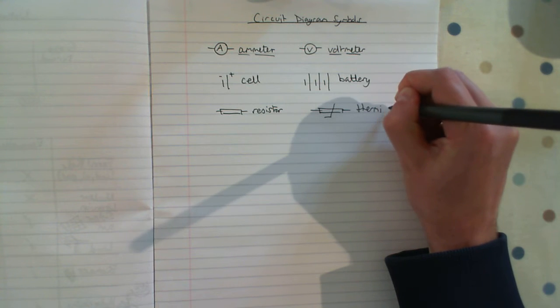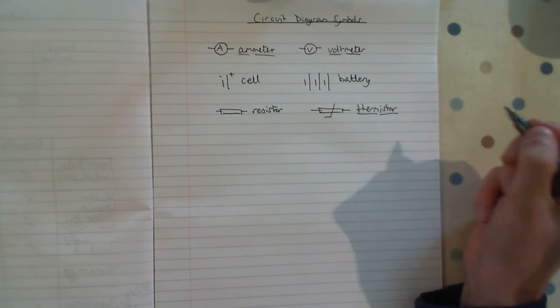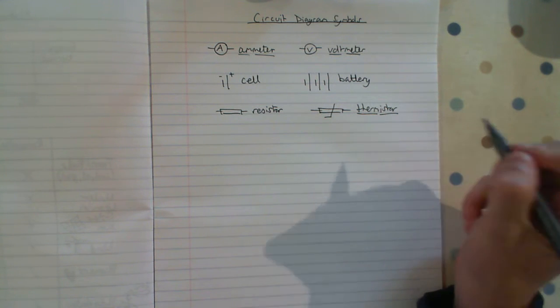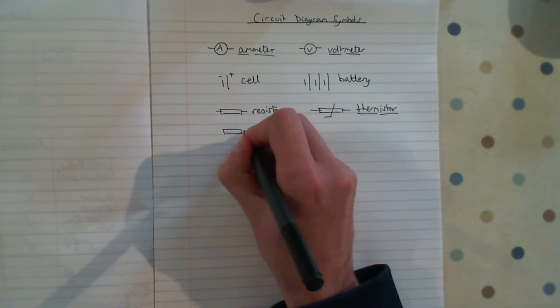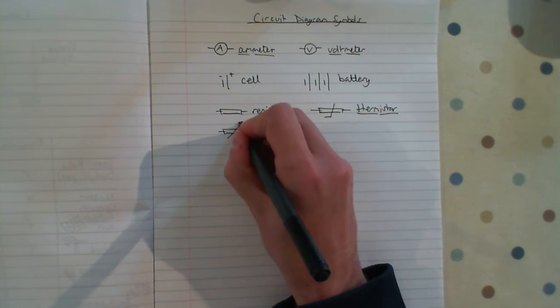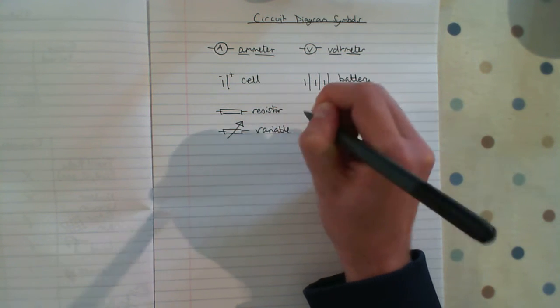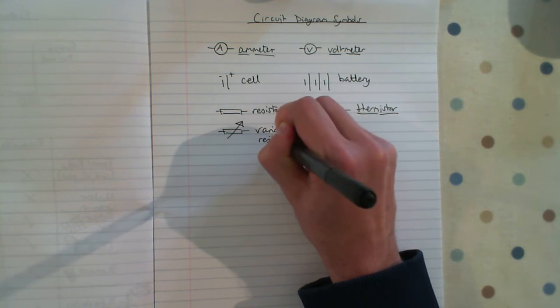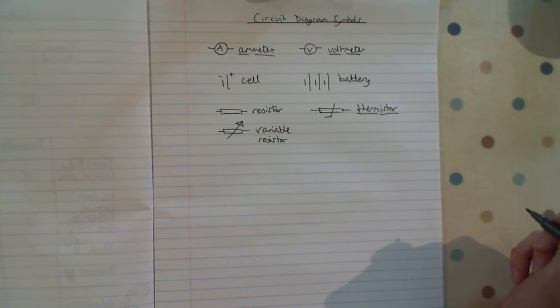A rectangle with a hockey stick going through it is a thermistor. Therm meaning temperature or heat, istor meaning resistor, so it's a resistor that depends on temperature. Rectangle again with a big arrow going through it - that is a variable resistor, and we can change the resistance of a variable resistor.